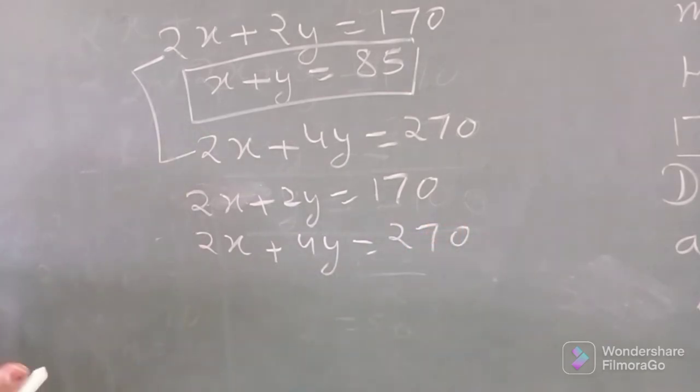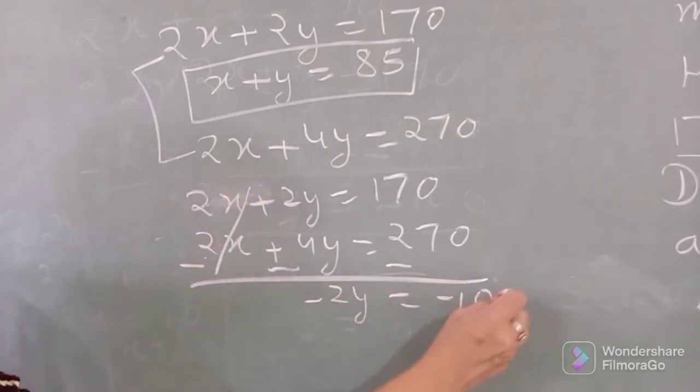Using elimination method, 2x terms are same, so subtracting: 2y equals 100. Minus minus cancel, so y equals 100 divided by 2.